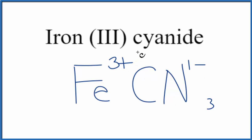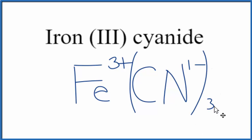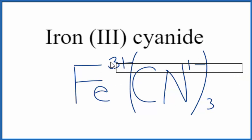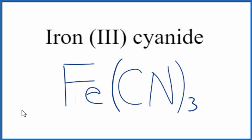We also need to put parentheses around the cyanide ion. So we have 3 times 1 minus equals 3 minus, and 3 plus gives a net charge of 0. Let's remove these symbols. So this is the correct formula for iron 3 cyanide: Fe(CN)₃.